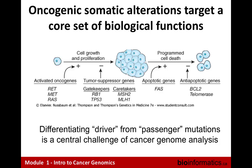Oncogenic somatic mutations target a core set of biological functions. Driver mutations or oncogenes are activating mutations — copy number alterations and rearrangements that drive or activate pathways that shouldn't be expressed. Tumor suppressor genes are the cell's brakes — genes commonly deleted or with loss-of-function mutations that try to turn off pathways. The whole point of next-gen sequencing is reading out all these classes of cancer genome variation. The real challenge in tumors like melanoma and lung cancer with thousands of mutations is honing in on specifically what drives these tumors and what can be done about them.